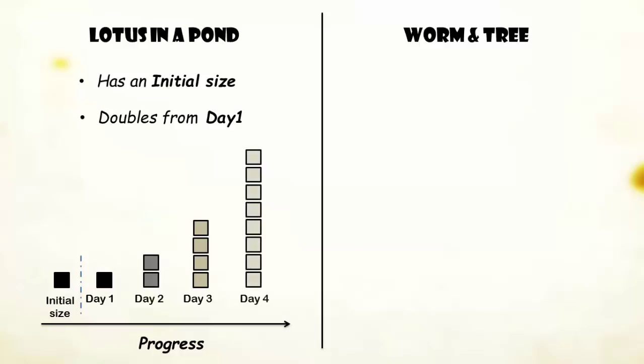Whereas, in the worm riddle, it's not doubling its appetite from the first day. Rather, it simply eats just one leaf on day 1 and doubles it from the second day onward.